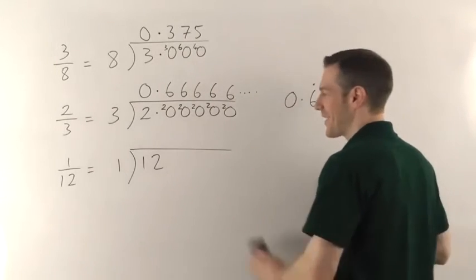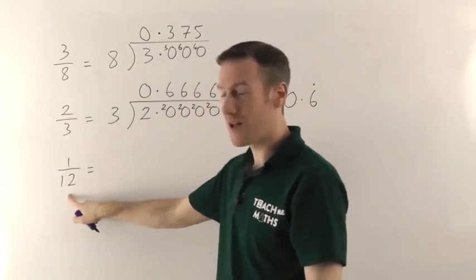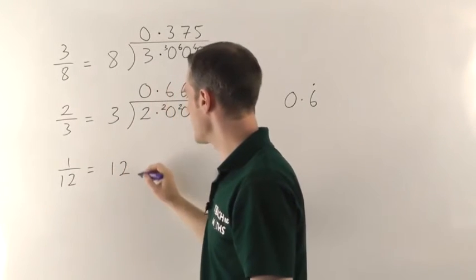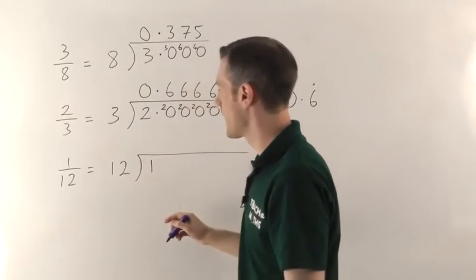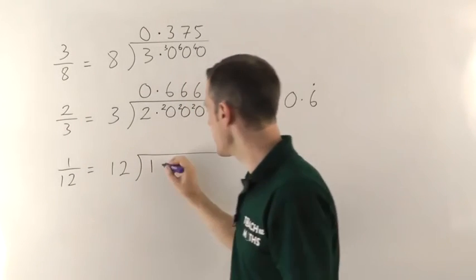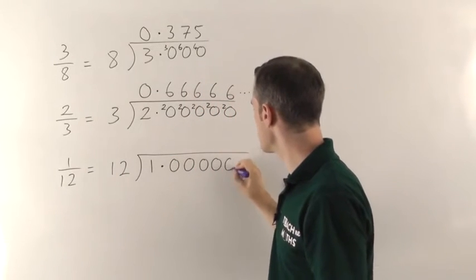Okay the one on the bottom always comes first. You're dividing by 12. The number you're dividing by goes outside the division. So 12s into 1 and again we make that into 1.0000 however many zeros you want.